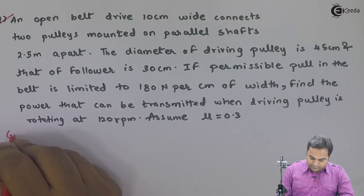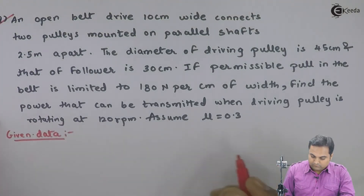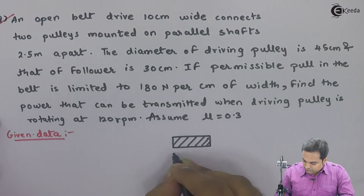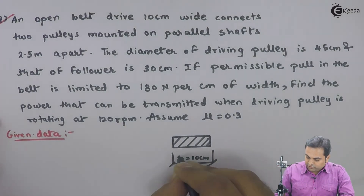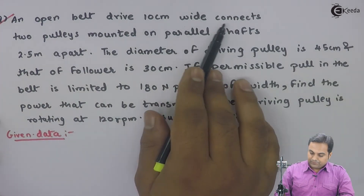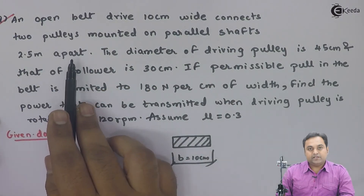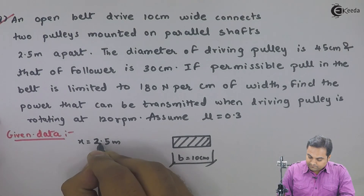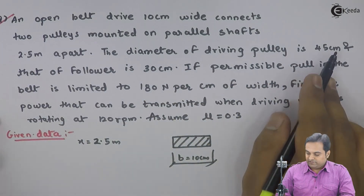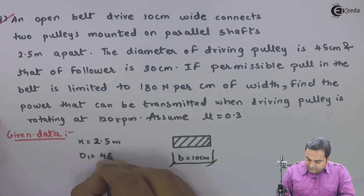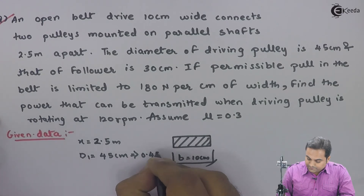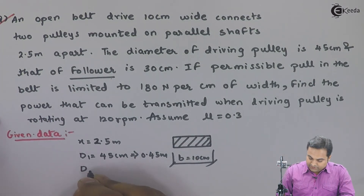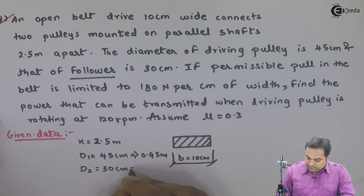I will write the data. Width of the belt is 10 centimeter. X, the distance between the centers of two pulleys, is 2.5 meters. The diameter of the driving pulley, d1, is 45 centimeters, which is 0.45 meter. The diameter of the follower — the driven pulley — d2, is 30 centimeter, which is 0.3 meters.